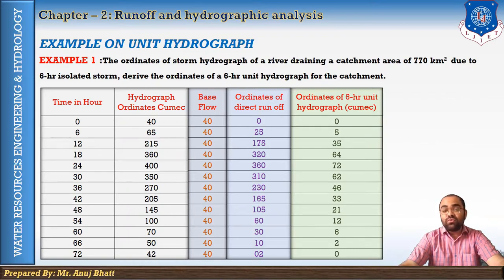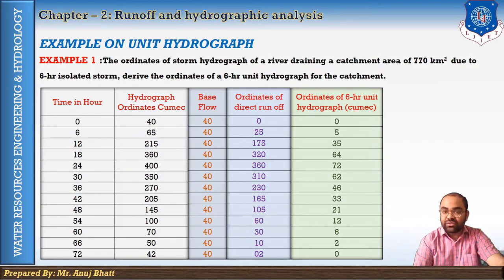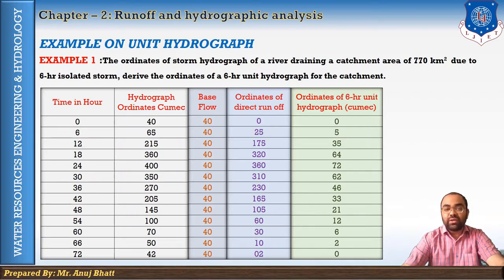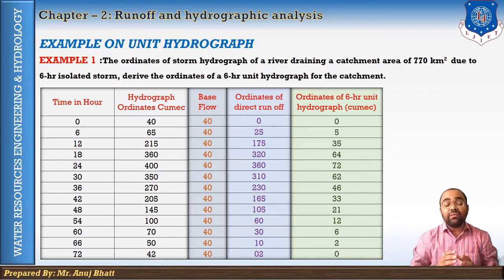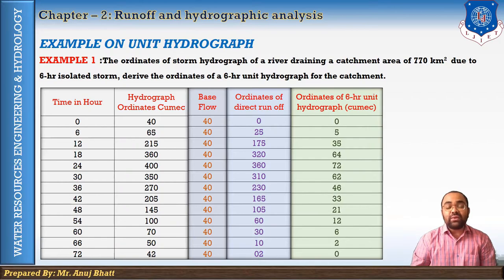Dividing all direct runoff ordinates by the depth of direct runoff (5.026) gives the ordinates of the six-hour unit hydrograph: 0, 5, 35, 64, 72, 62, 46, and so on. We are asked to derive the ordinates of the six-hour unit hydrograph, so we don't need to plot a graph unless specifically asked. This completes the first example.